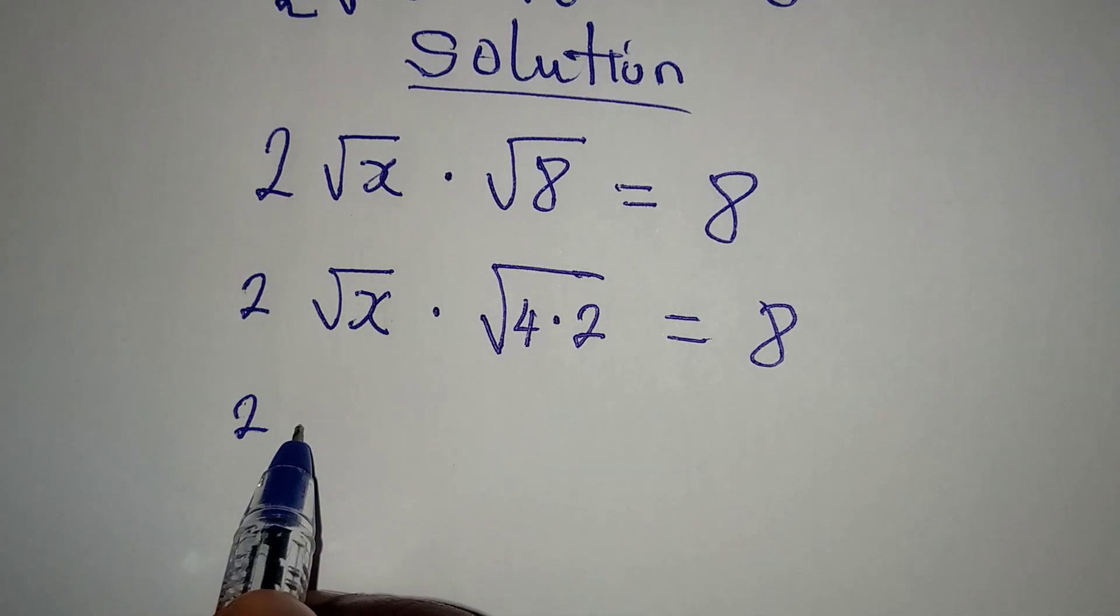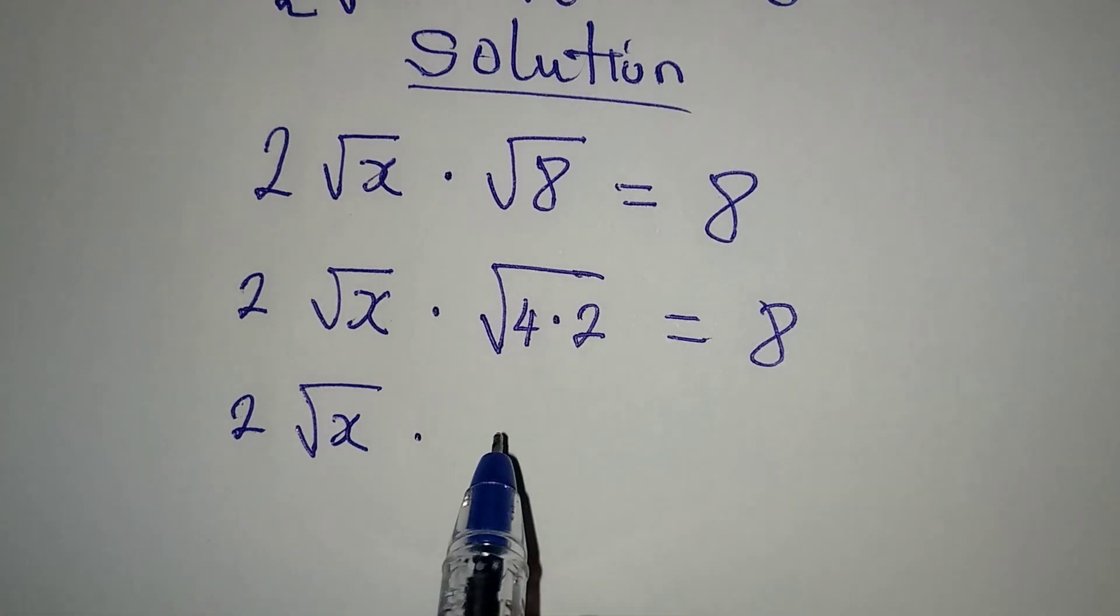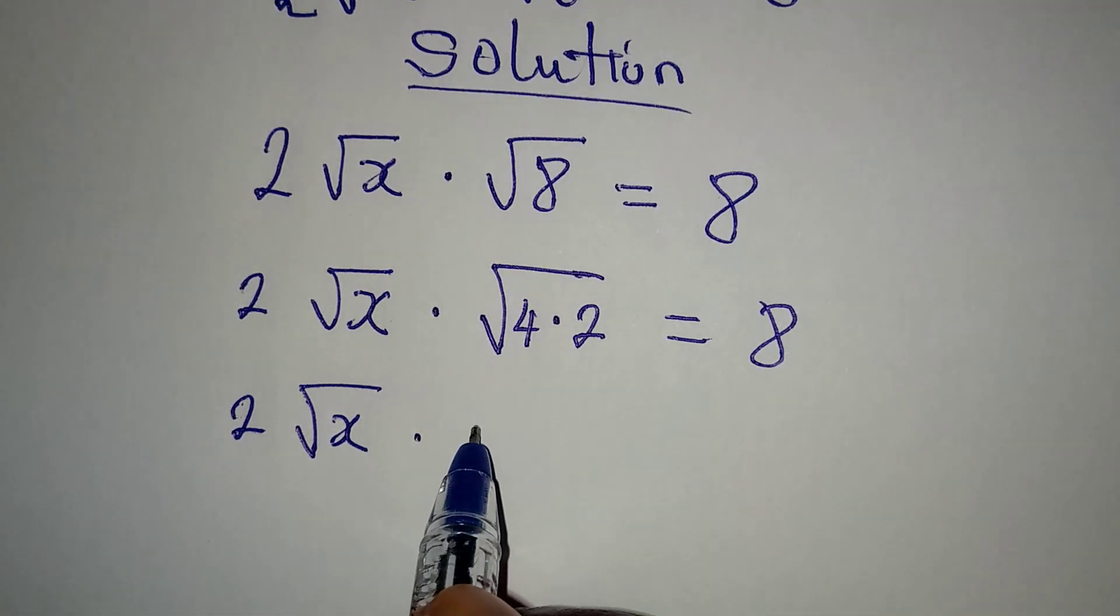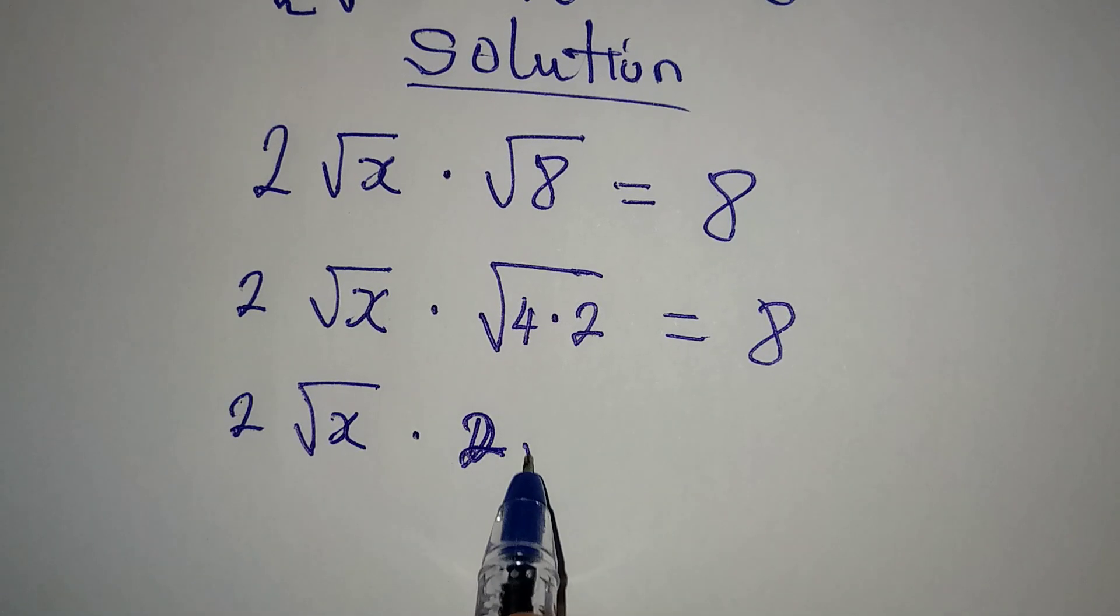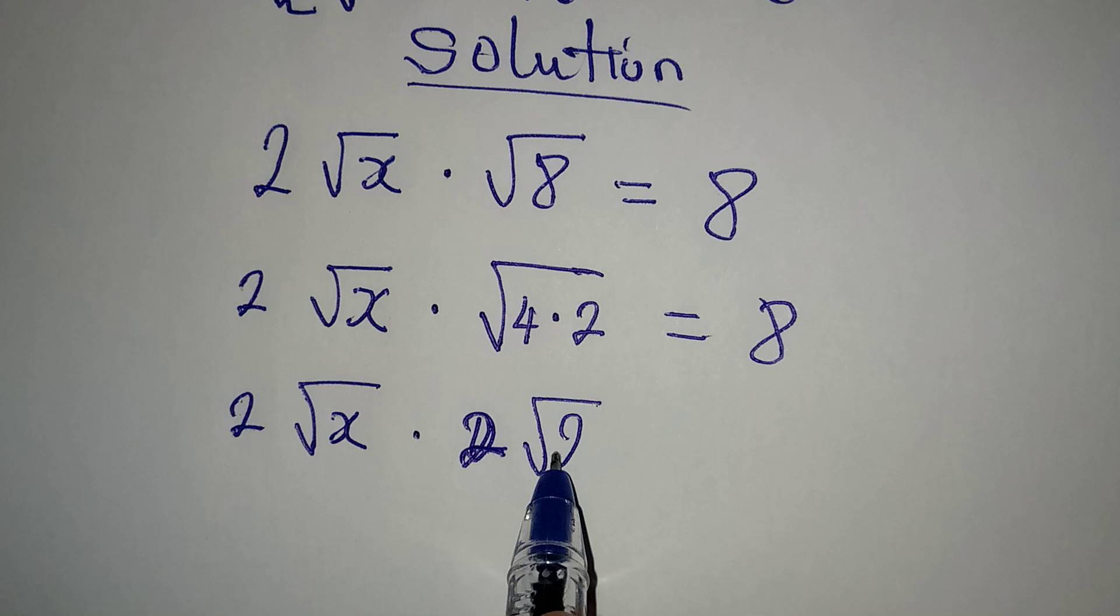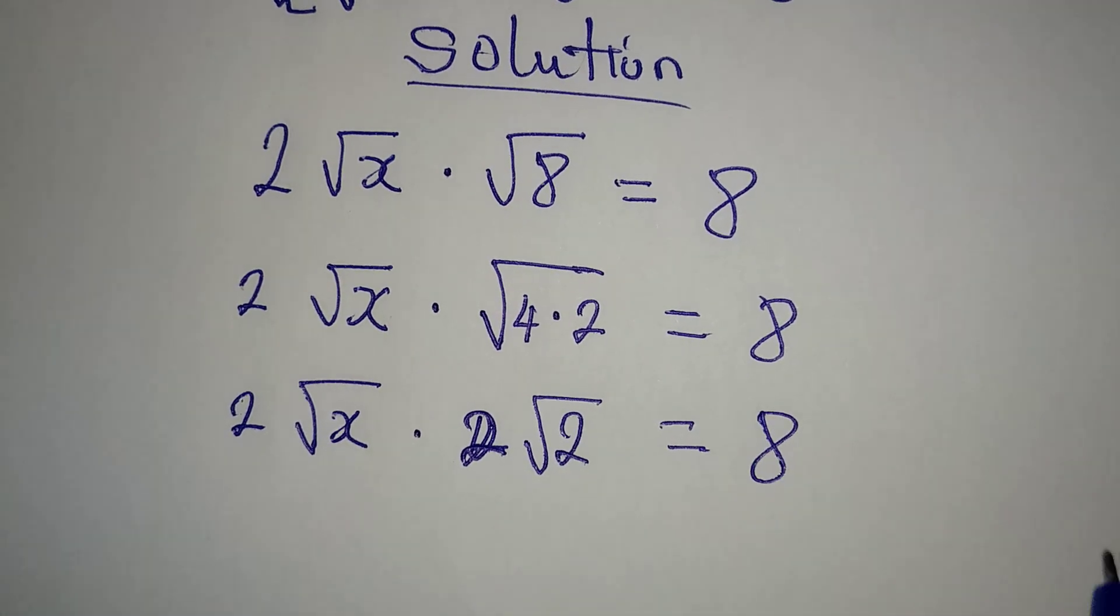So we have 2√x multiply by √4, which is 2. That means here is 2, then we have √2 in the bracket, and then this will be equal to 8.